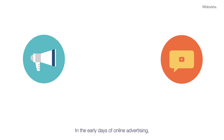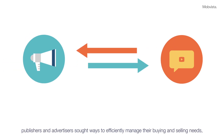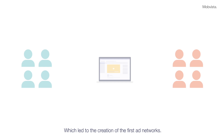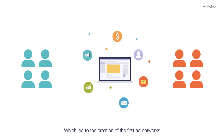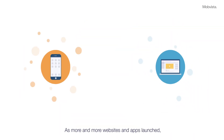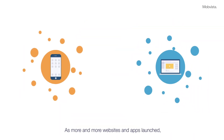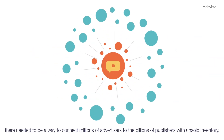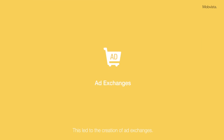In the early days of online advertising, publishers and advertisers sought ways to efficiently manage their buying and selling needs, which led to the creation of the first ad networks. As more and more websites and apps launched, there needed to be a way to connect millions of advertisers to the billions of publishers with unsold inventory. This led to the creation of ad exchanges.